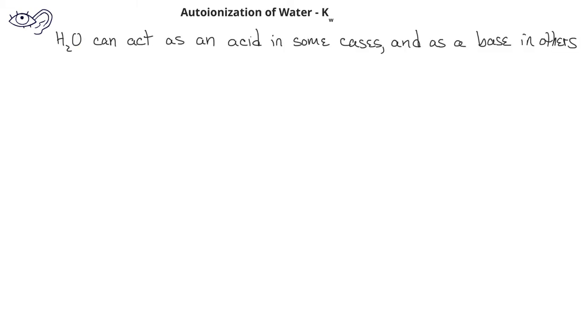If you've been paying attention to the previous videos, you've probably noticed that in some examples water acted as a Bronsted-Lowry acid, and in other cases it acted as a Bronsted-Lowry base. What this means is that the water molecule can act as either an acid or a base. If we have two water molecules present, one of them can donate a hydrogen ion to another water molecule. This is called the auto-ionization of water.